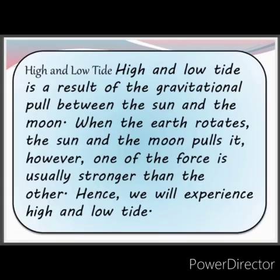High and low tide is a result of the gravitational pull between the Sun and the Moon. When the Earth rotates, the Sun and the Moon pull it. However, one of the forces is usually stronger than the other. Hence, we experience high and low tides.